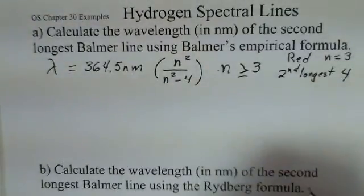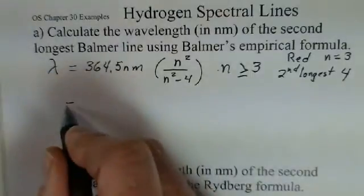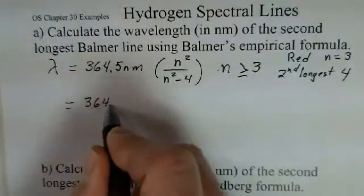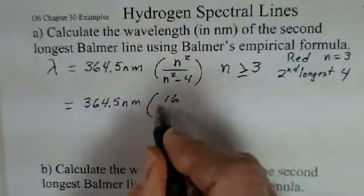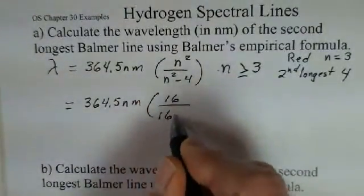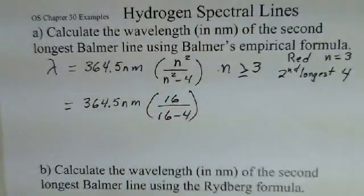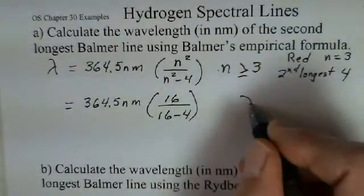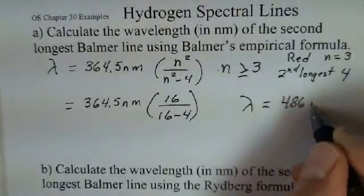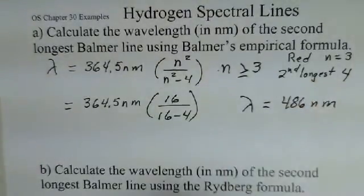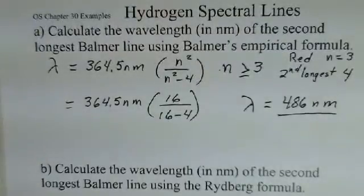Use a 4 for the n. So we can go ahead and put that in, 364.5 nanometers. I'm going to use a 4 for the n. I'm going to get a 16 here. I'm going to get a 16 down here and minus the 4. You should pause and do this calculation. Welcome back.